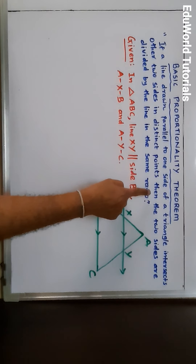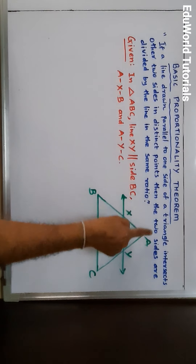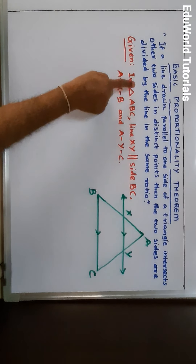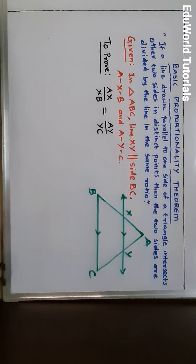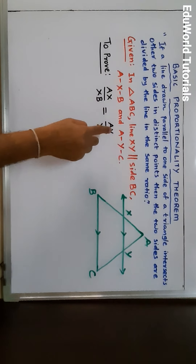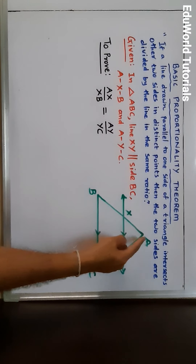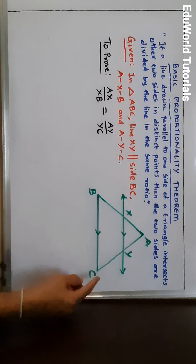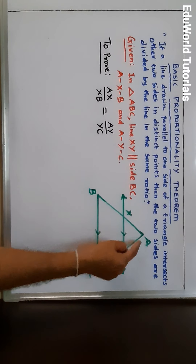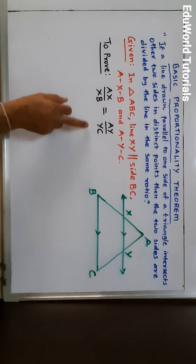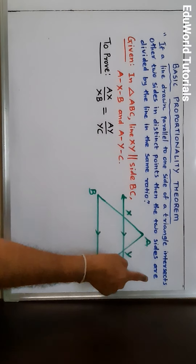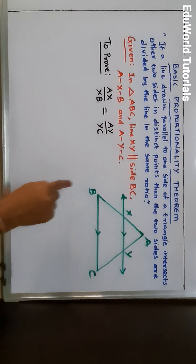Now we have to see the consequent — the part of the statement that follows 'then.' The consequent is: the two sides are divided by the line in the same ratio. That means we have to prove that AX upon XB is equal to AY upon YC, because line XY divides sides AB and AC of triangle ABC in the same ratio. This is what we have to prove, and this is the Basic Proportionality Theorem.